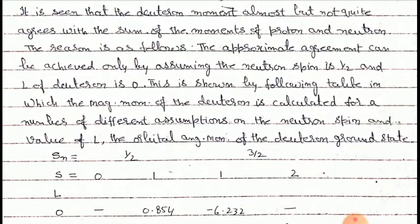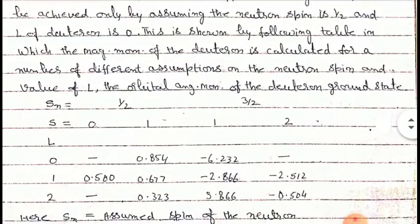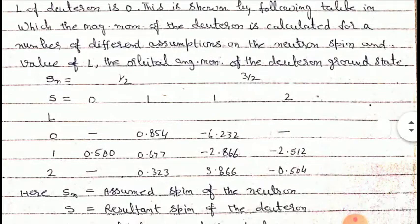This is shown by the following table, in which the magnetic moment of the deuteron is calculated for a number of different assumptions on the neutron spin and value of L — the orbital angular momentum of the deuteron ground state. In this table, we consider S_n, the spin of the neutron, first as half and then as three by two.